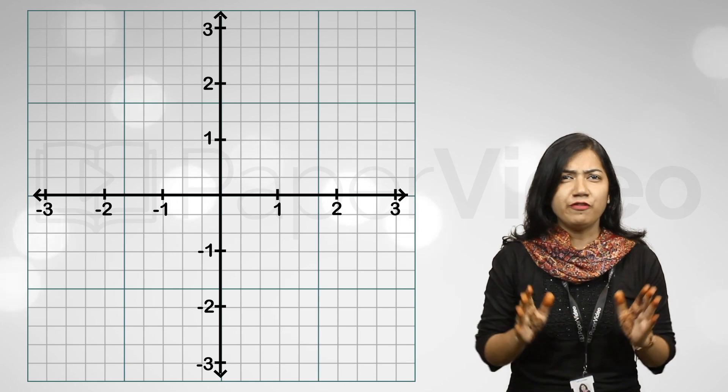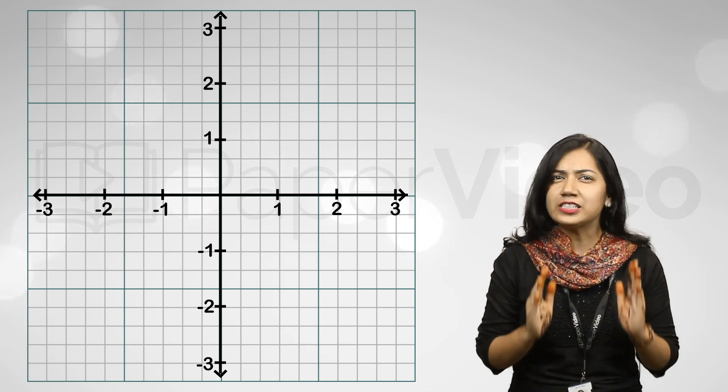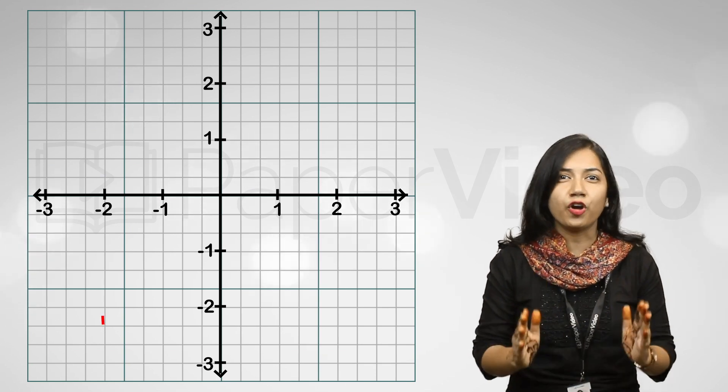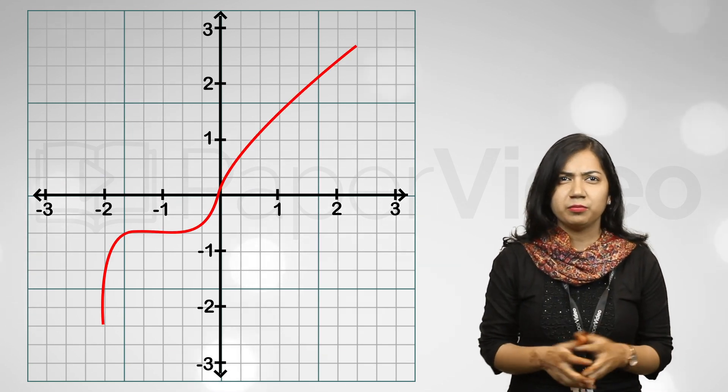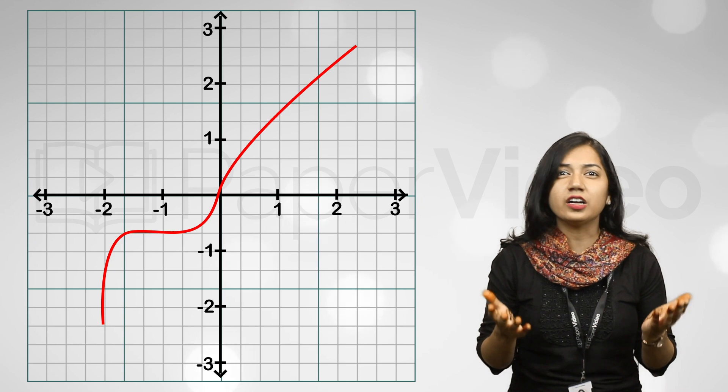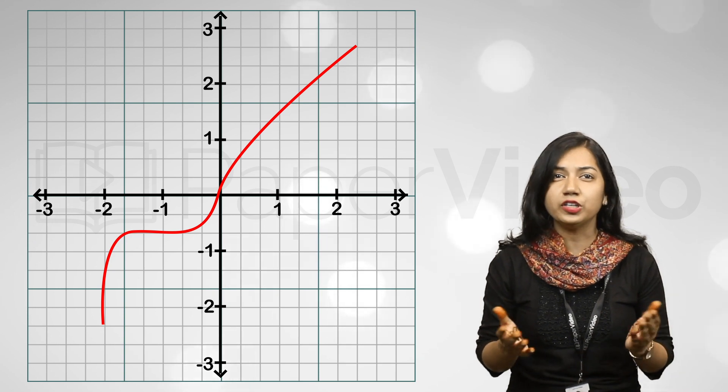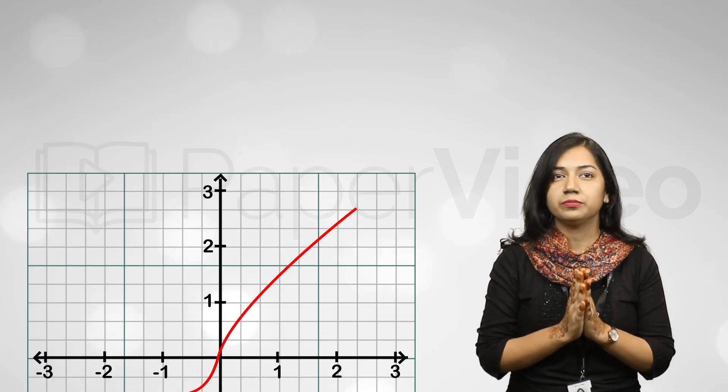Graph of a polynomial. How do we describe a graph of a polynomial? As we already know, to draw a graph of a polynomial, we follow certain steps of drawing on a graph paper. But how does a graph of a polynomial look in general?